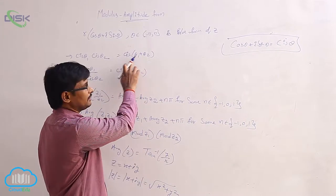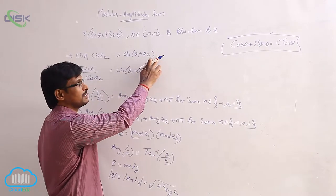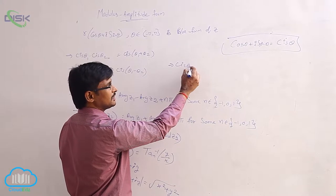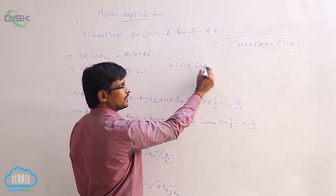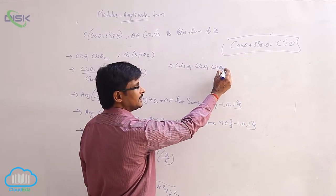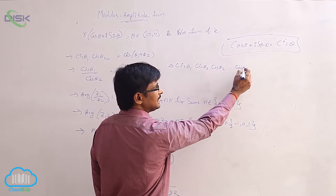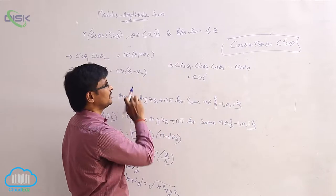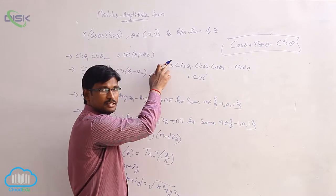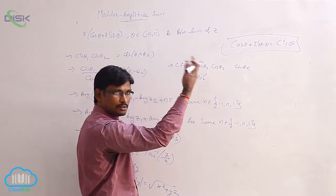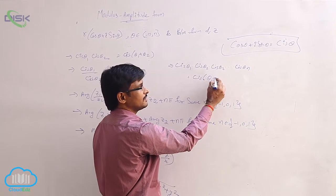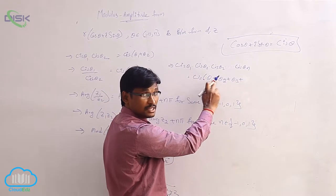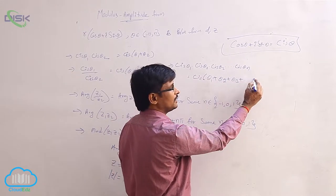cis θ₁ · cis θ₂ = cis(θ₁ + θ₂). Similarly, if there are multiple numbers cis θ₁, cis θ₂, cis θ₃, and so on up to cis θₙ, we can write the product as cis(θ₁ + θ₂ + θ₃ + … + θₙ).